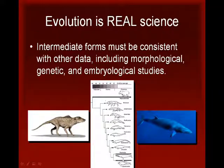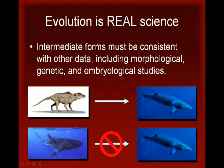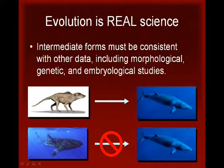Evolution also tells us which intermediate forms should not be found. Despite their superficial similarities, no intermediate forms are predicted between whale sharks and whales. This is because the morphological and genetic evidence indicates that whale sharks and whales are not closely related. The discovery of such a fossil would actually be evidence against evolution. No such anachronistic fossil forms have ever been discovered.